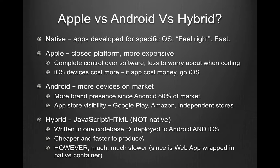When coding for Android, you have to take all these variables into consideration. Not so with iOS — there's just a few phone sizes and the iPad. Another point is that iOS devices cost more, so if you're selling your app for money in the App Store, go iOS because their wealthier owners are more likely to buy your app. However, if your app is free and you're going for brand presence, then go Android because 80% of the market own Android devices. You also get more App Store visibility — you can get Android apps from Google Play Store, the Amazon Store, or any independent app stores.